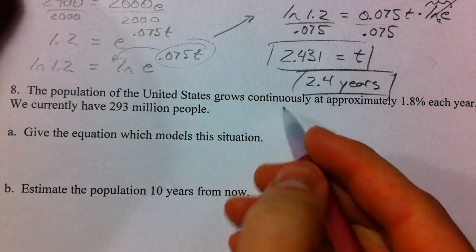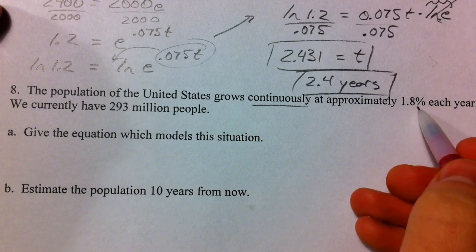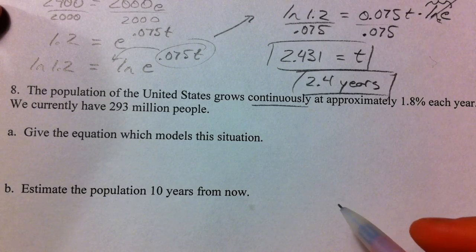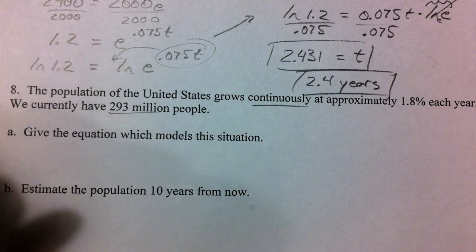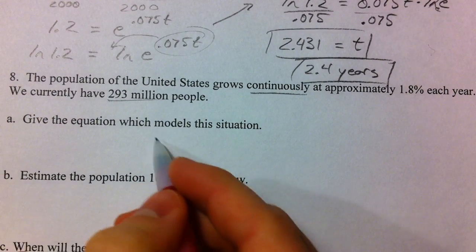All right. So the population in the U.S. grows continuously at approximately 1.8% each year. Currently have 293 million people. First, let's give the equation.